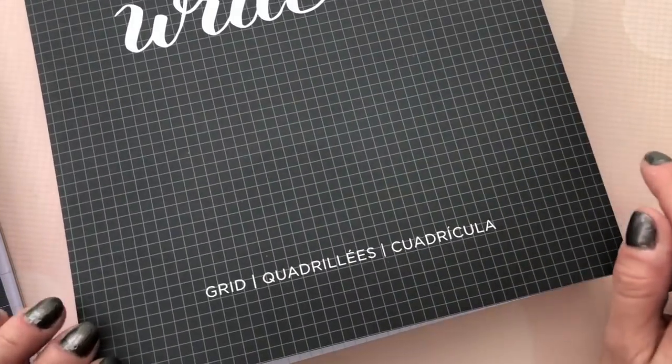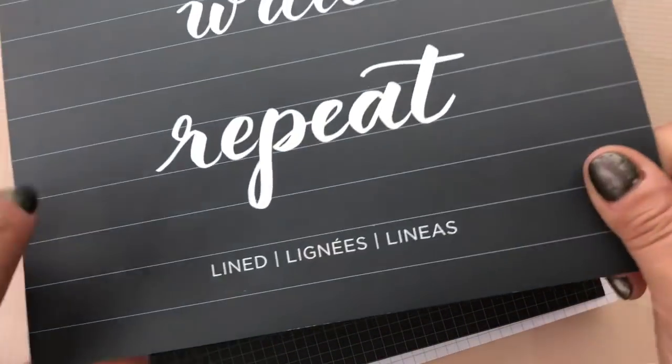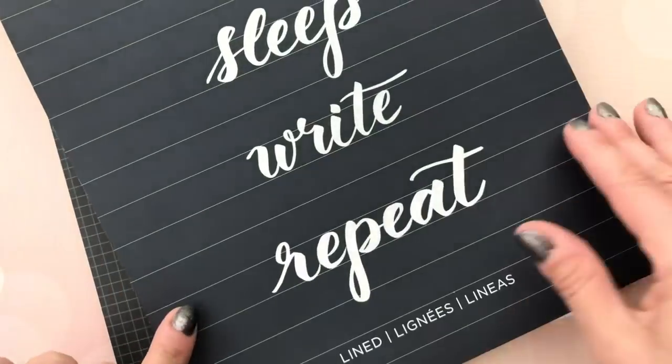So this is my grid pad. I also have a dot pad and here is the line pad in this collection. So this works with both large and small brush pens. It's super smooth paper.